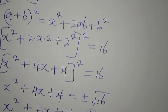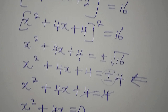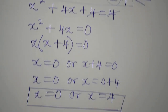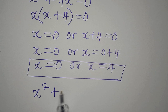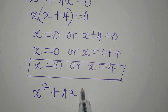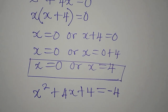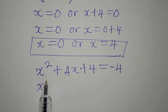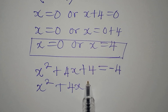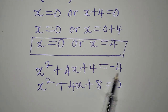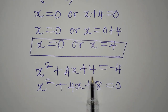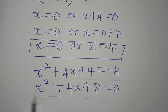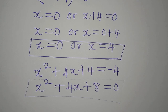Now we go back and use the negative case, making the right-hand side equal to -4. So x² + 4x + 4 = -4, which rearranges to x² + 4x + 8 = 0. The -4 moves to the left and becomes +4, adding to the existing 4 to give 8. We'll solve this using the quadratic formula.